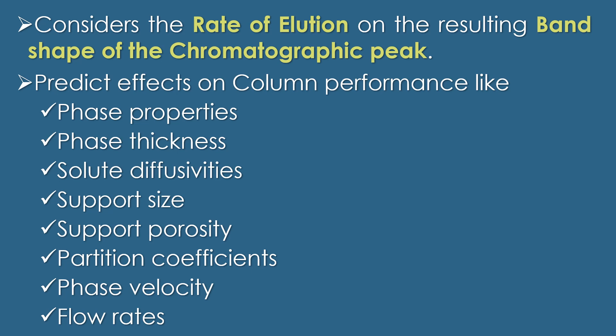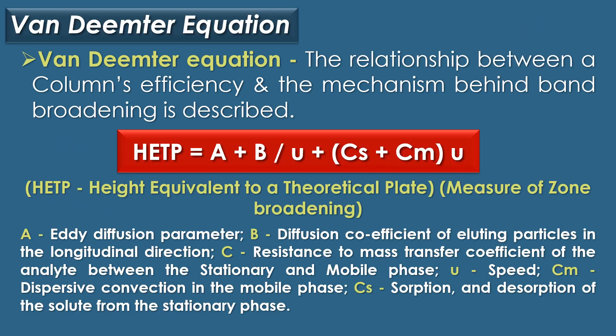The rate theory also considers phase velocity and flow rates. The rate theory of chromatography is expressed mathematically by the Van Deemter equation, which describes the relationship between a column's efficiency and the mechanisms behind band broadening. Mathematically, the rate theory is represented as: HETP = A + (B / u) + (Cs + Cm) × u.